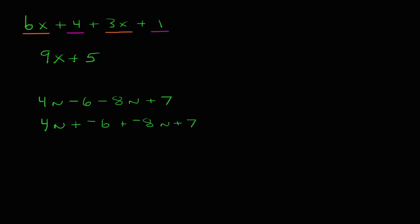Now I can identify my like terms and add them. I have 4n and -8n as like terms, and -6 and 7 as like terms. When we combine 4n and -8n we get -4n. When we combine -6 and +7 we get +1. Notice again we cannot go any further because -4n and 1 are not like terms.